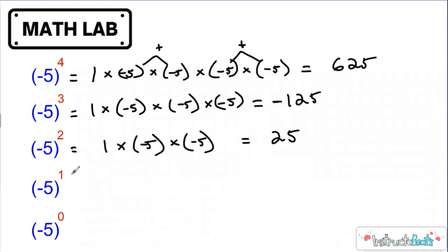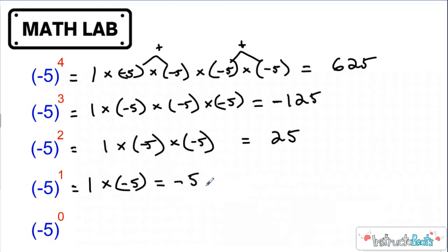Not very hard. Now here we have one times one copy of negative five. A positive times a negative would be a negative, so this should be negative five. And then we get into the zero exponent rule. Here I'm starting with one and multiplying it by zero copies of negative five. So one times zero copies would just be one.